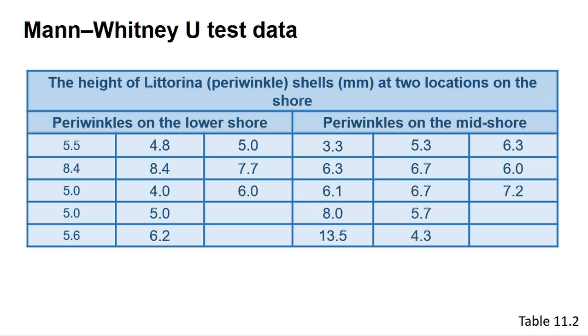The Mann-Whitney U test is performed on samples where the data is independent. In this case, we are looking at the height of two samples of periwinkle distinguished by their position on the shore. No periwinkle is measured more than once. The data can be found in table 11.1.